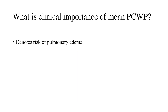What is the clinical importance of mean pulmonary capillary wedge pressure? It denotes the risk of pulmonary edema. Of the two waveforms — V wave and A wave — the V wave also denotes risk of pulmonary edema; a greater V wave means greater risk. Overall, if the mean wedge pressure is more than 24–25 mmHg, there is high risk of pulmonary edema, seen clinically and on chest X-ray.